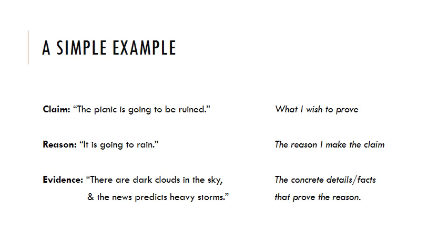Let's do a simple example, going back to our picnic argument: If it rains, the picnic will be ruined. It's going to rain. Therefore, the picnic will be ruined. Let's look at it in this more complex form with different types of premises — evidence and reasons — leading to our claim. The claim I want to make is: the picnic is going to be ruined. The reason: it's going to rain. At this stage we're still at the same level as the simple syllogistic form.